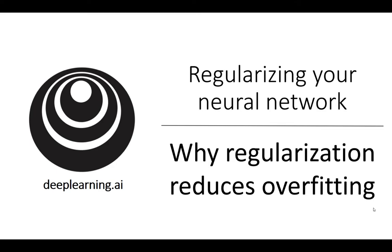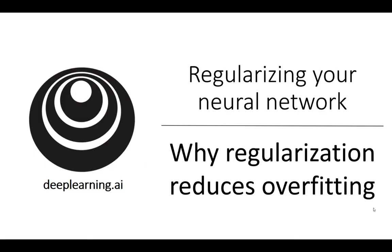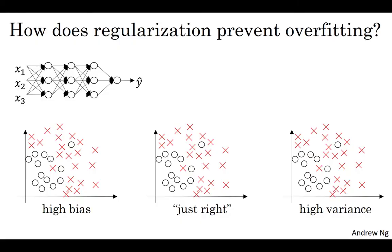Why does regularization help with overfitting? Why does it help with reducing variance problems? Let's go through a couple of examples to gain some intuition about how it works. Recall that high bias, high variance, and just right pictures from earlier video had looked something like this. Now, let's say we're fitting a large and deep neural network. I know I haven't drawn this one too large or too deep, but let's say we're fitting some neural network and it's currently overfitting.